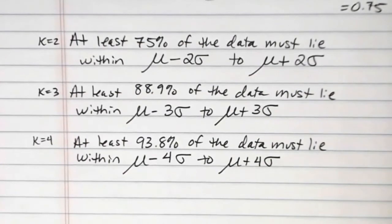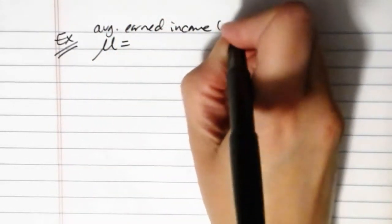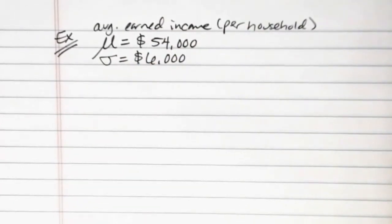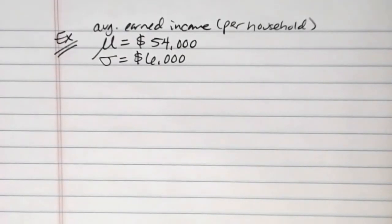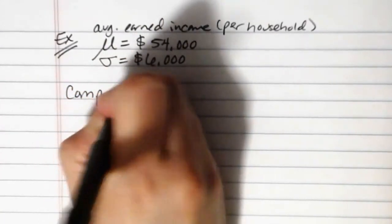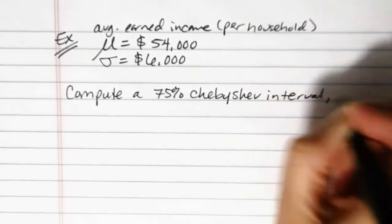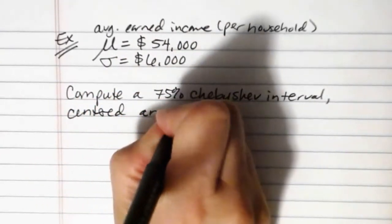Okay, so let's say that I knew that the average earned income in Whatcom County per household is $54,000 a year and let's say the standard deviation there is $6,000. And so let's say that what I want to do is compute a 75% Chebyshev interval centered around the mean.